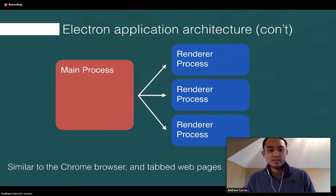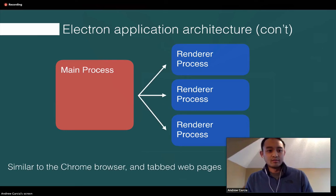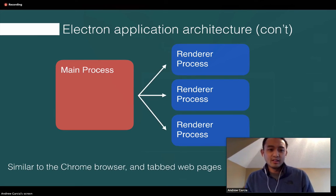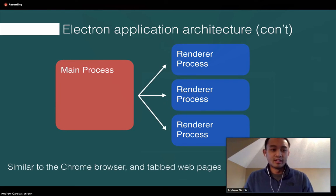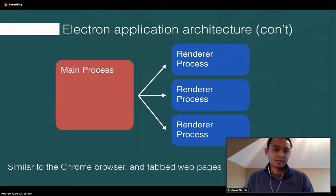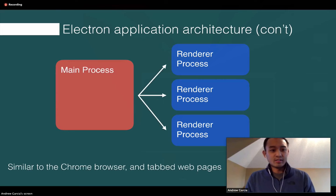In a typical Electron architecture, you have one main process and you can spawn off multiple renderer processes. You can think of renderer processes as different windows in your application. Renderer processes don't necessarily have to render a web page — you can farm out some logic from the main process to a renderer process. This setup is similar to Chrome: the application itself is the main process, and each tab or web page is equivalent to a renderer process.